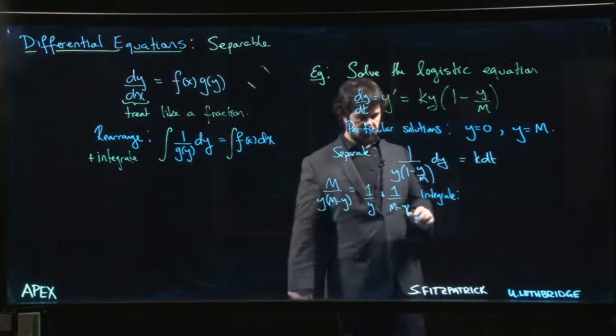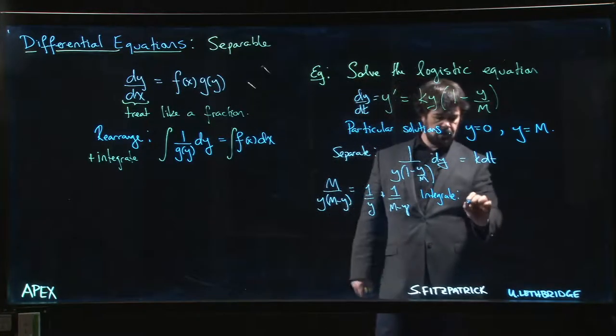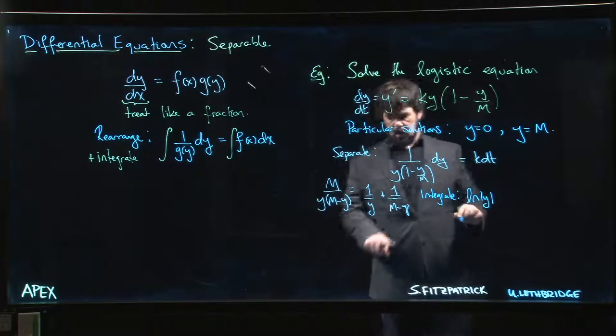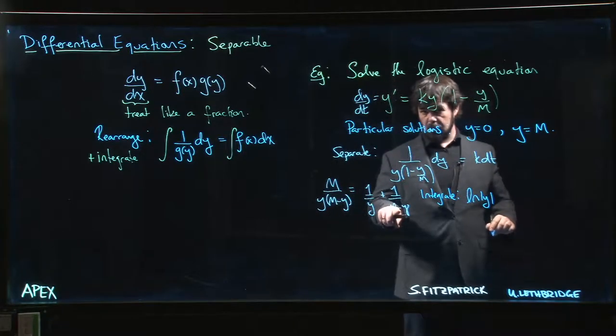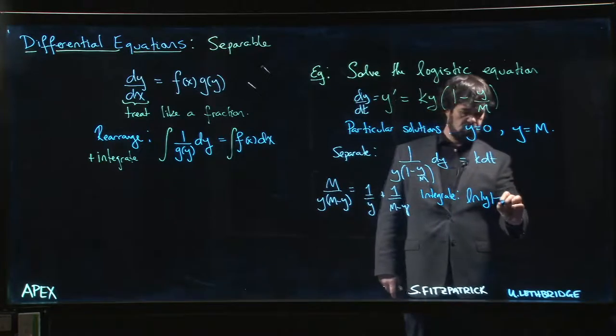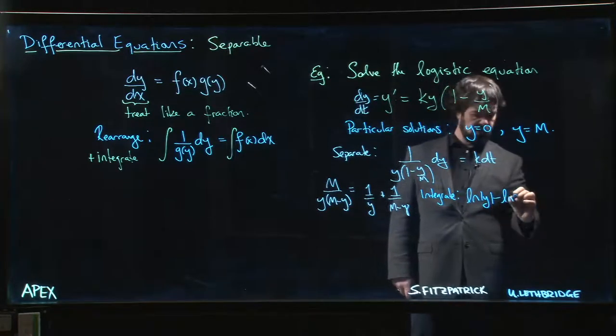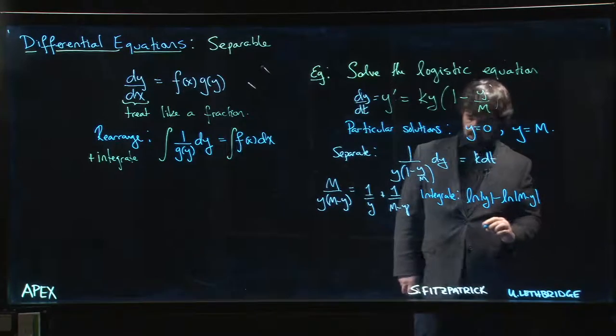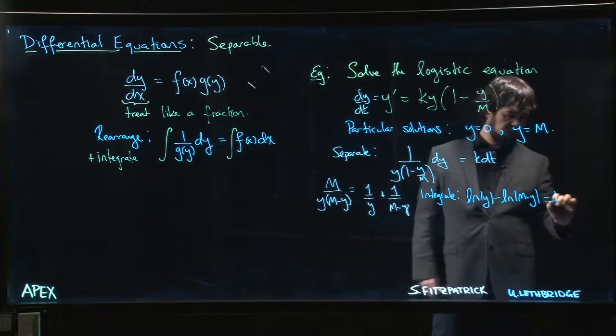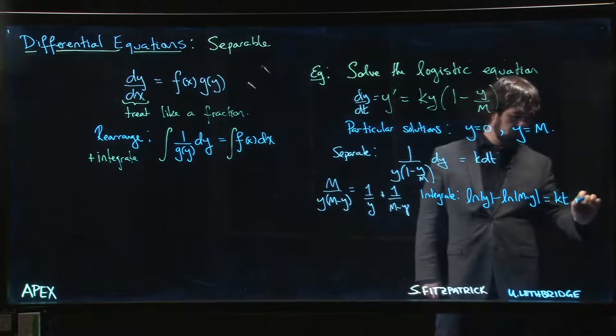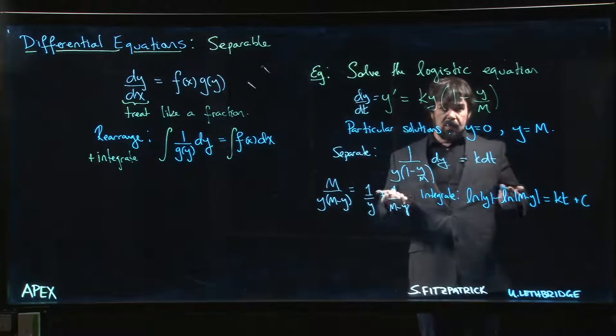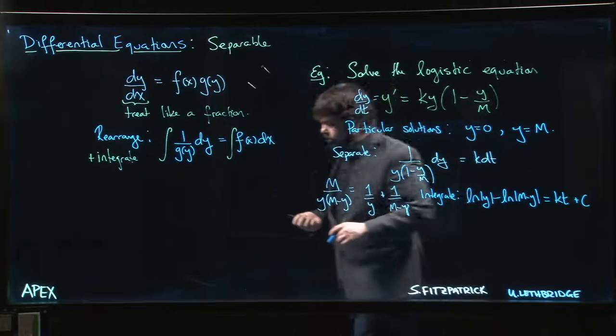So here we just integrate each term. 1/y integrates to natural log absolute value of y. Be careful of that minus sign in front of the y. When we take the antiderivative there, chain rule forces that minus sign to come out and minus y. On the other side we just have kt, possibly plus some constant.